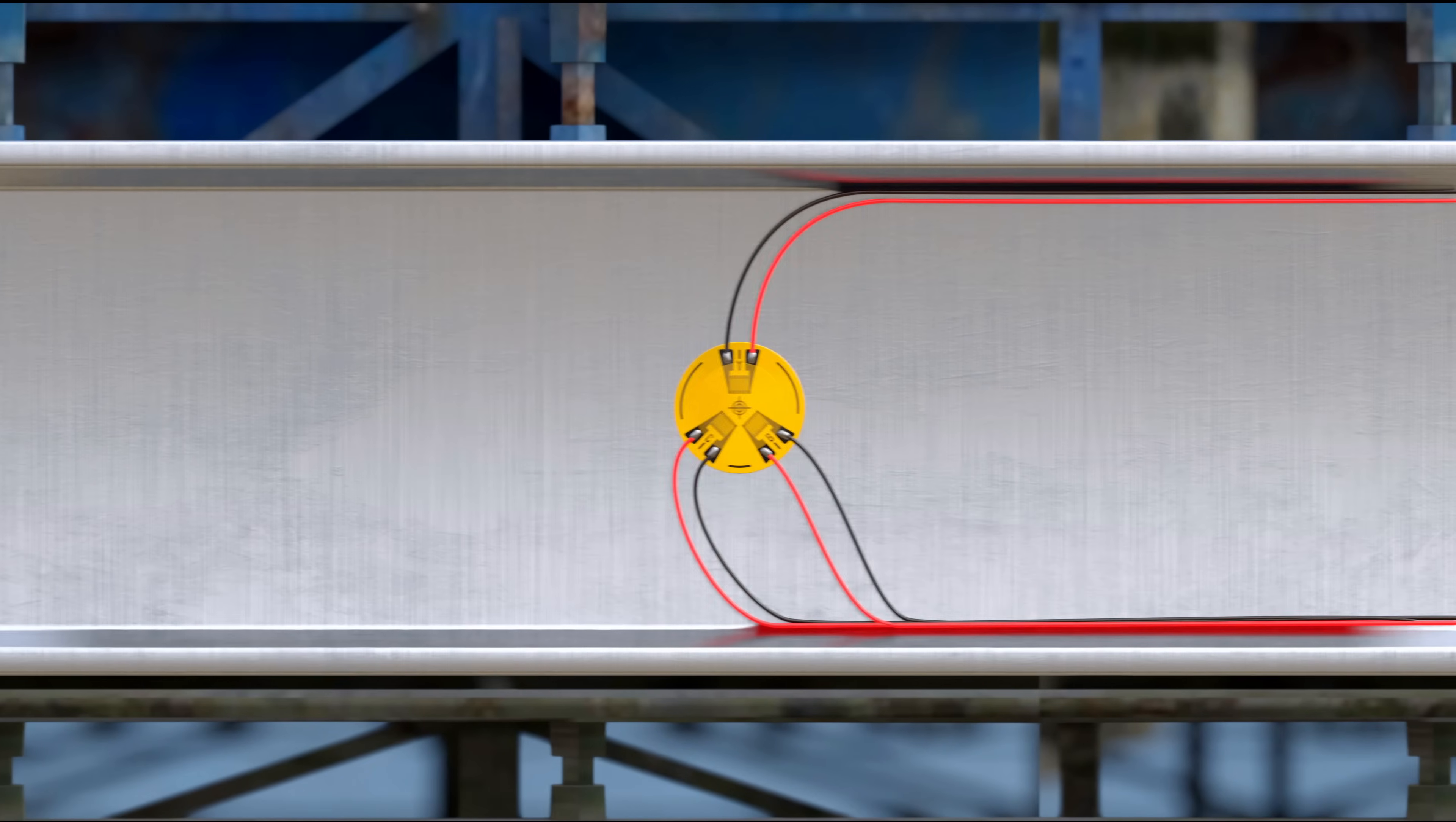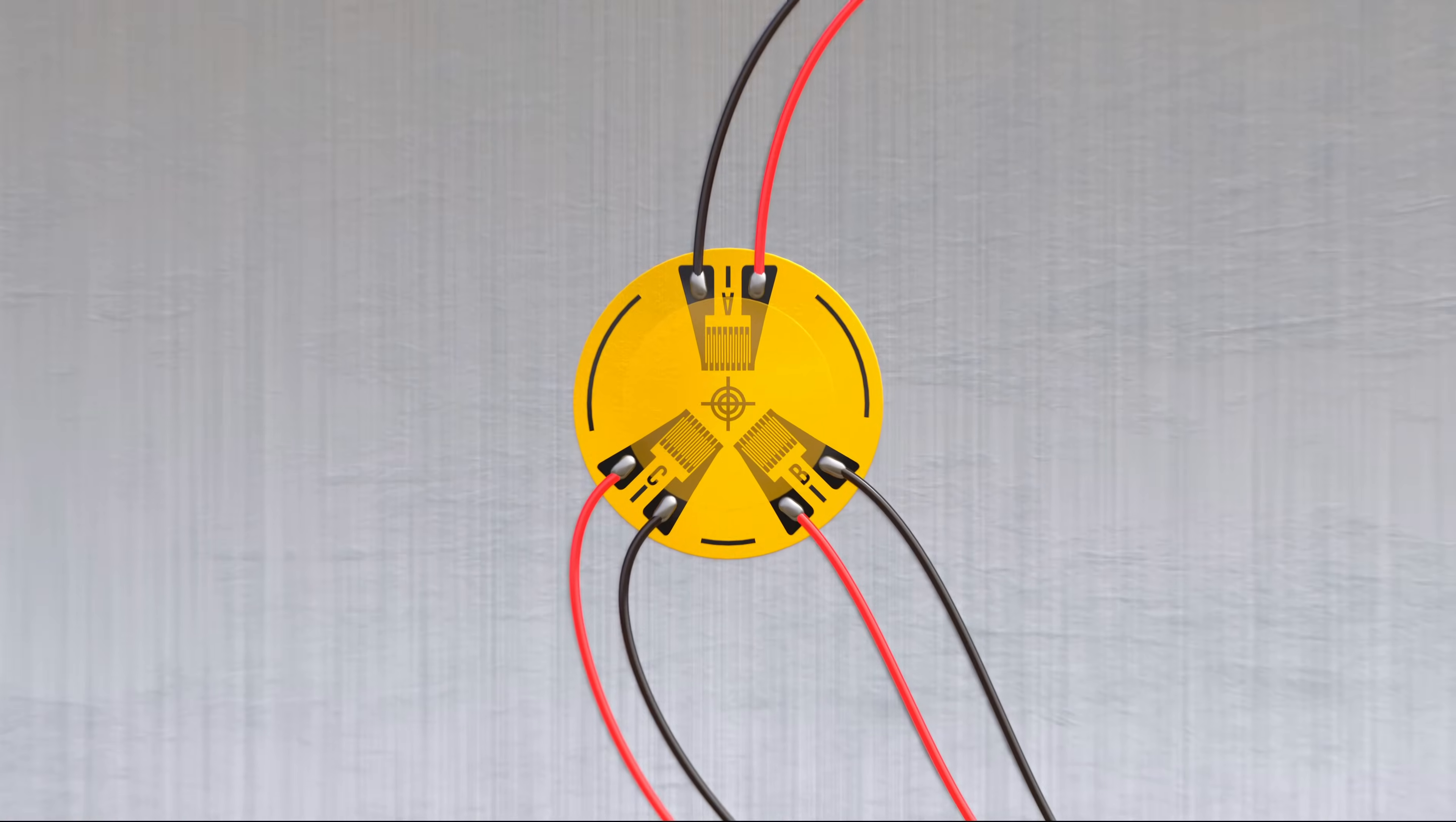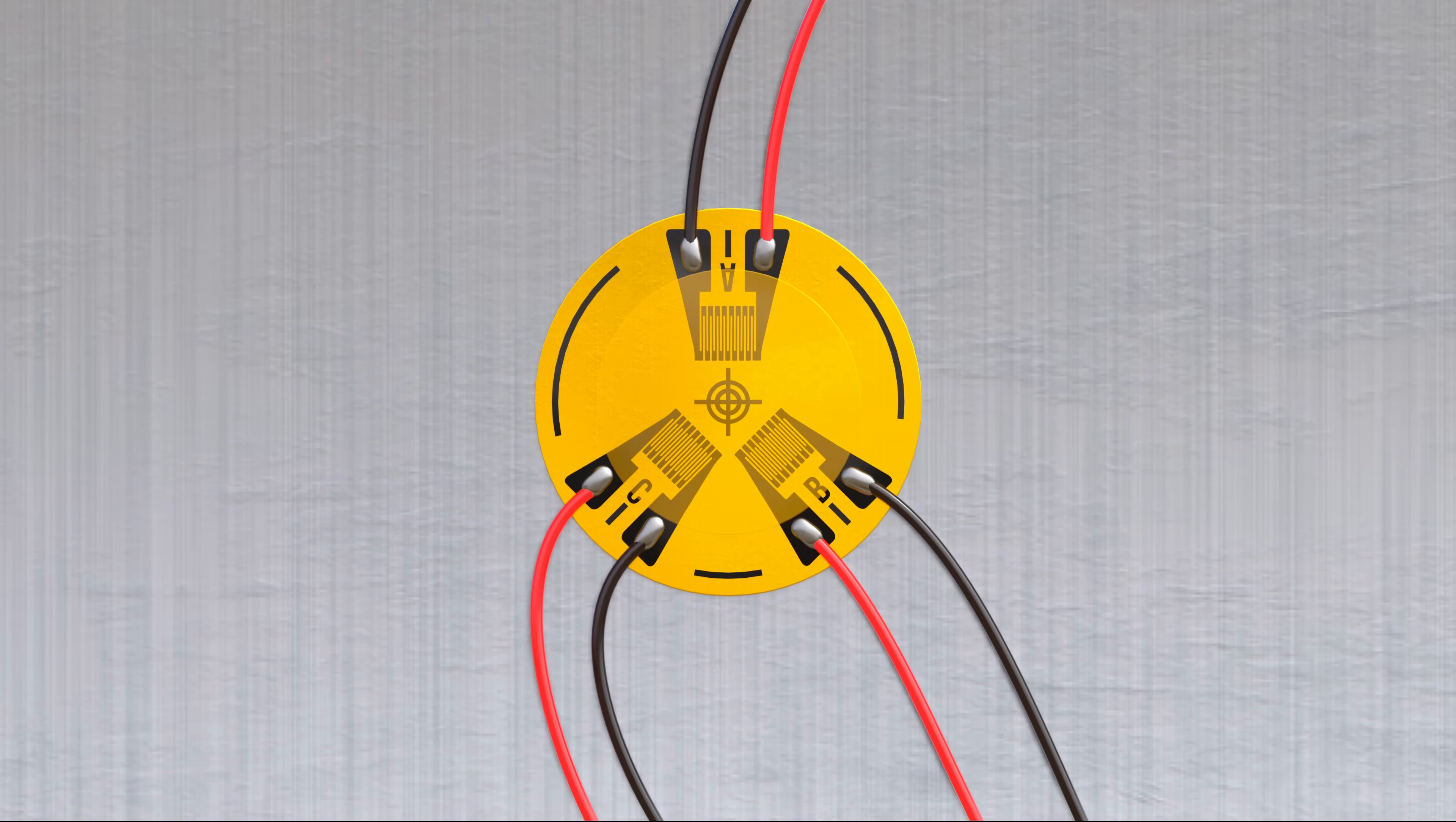Here's another interesting rosette design, used to determine residual stresses. It's fixed to the test item, and a small blind hole is drilled into the material at the center of the rosette. The strain gauges measure the changes in strain that occur due to relaxation of the residual stresses in the vicinity of the hole. And these measurements can be used to calculate the magnitude of the residual stresses.